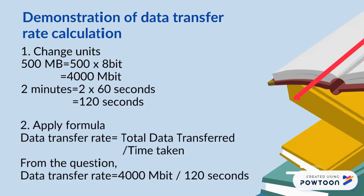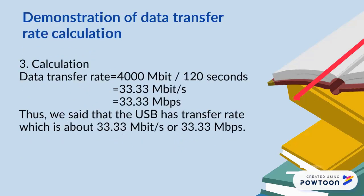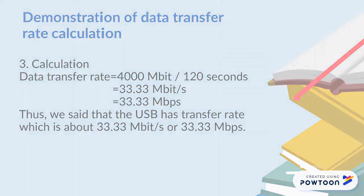Secondly, we apply the formula: data transfer rate is equal to the total data transferred per second. Thirdly, we do the calculation. The data transfer rate is equal to 5000 Mb per 120 seconds, which gives 33.23 Mb per second. Thus, we can say that the USB has transferred data at a rate of about 33.23 Mb per second.